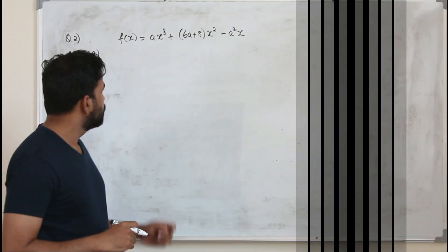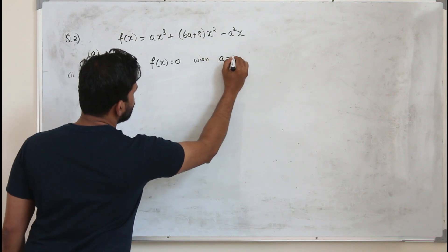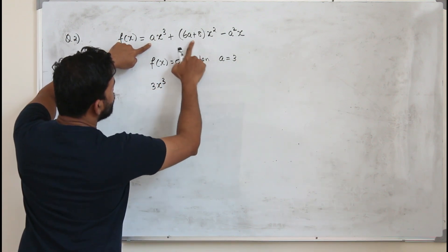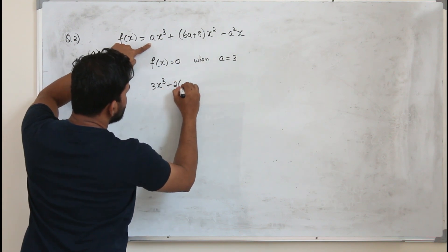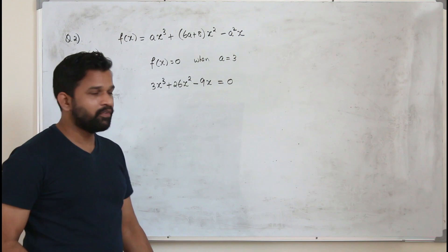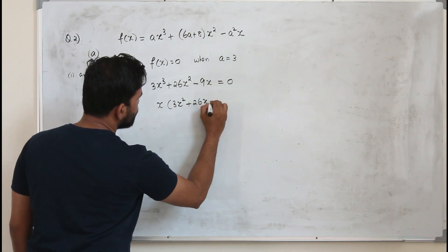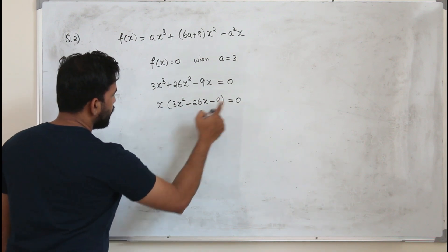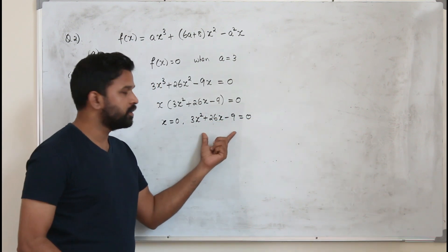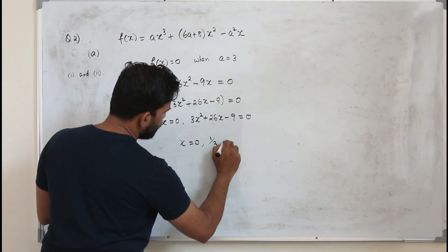Part A(ii): using a equals 3, solve f(x) equals 0. Replace a by 3: f(x) becomes 3x cubed plus 26x squared minus 9x equals 0. This is a cubic without a constant term, so factor out x: x times (3x squared + 26x minus 9) equals 0. So x equals 0 or the quadratic equals 0. Solving the quadratic gives x equals 1 over 3 and x equals minus 9. The three solutions are x equals 0, x equals 1/3, and x equals minus 9.